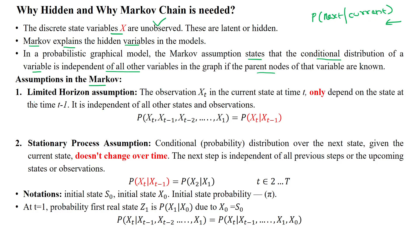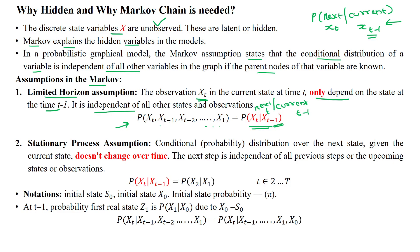The first assumption in the Markov chain is the limited horizon assumption. That means the observation of state x_t only depends on state x_{t-1}, i.e., the next state x_t only depends upon x_{t-1}, which is the current state. In mathematical notation: P(x_t | x_{t-1}, x_{t-2}, ..., x1) equals P(x_t | x_{t-1}). The current state is denoted with t-1 and the next state with t. The next state depends only upon the current state and is independent of all other previous states.